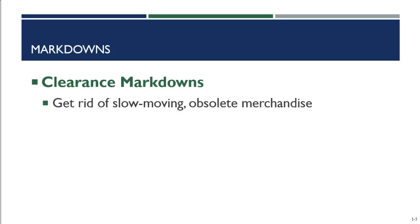When merchandise is selling at a slower rate than planned and will become obsolete at the end of the season — mostly fashion or seasonal merchandise — a retailer will clearance it out. Retailers may also clearance items if their price is much higher than competitors, because customers will always go elsewhere. Slow-selling merchandise decreases inventory turnover, which can prevent acquiring new merchandise and diminish the retailer's image. Markdowns are a cost of doing business, and retailers plan for them when setting prices.